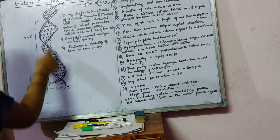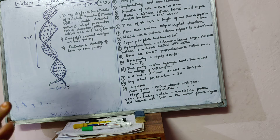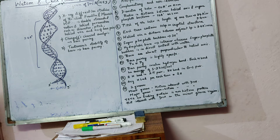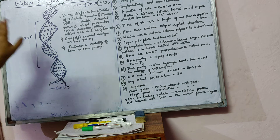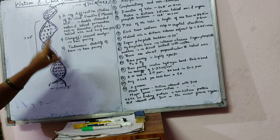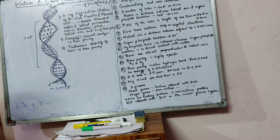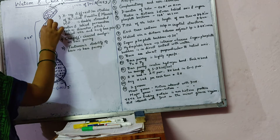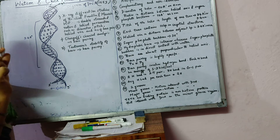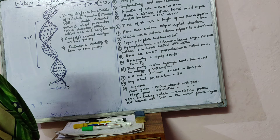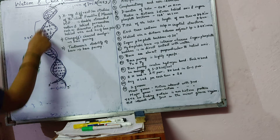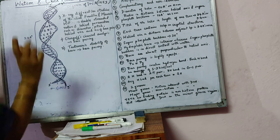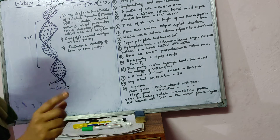Each turn accommodates 10 base pairs in crystal structure and 10.5 base pairs in solution. The helical rise, meaning the distance between two consecutive base pairs, is 3.4 angstroms or 0.34 nanometers. Since the length of one turn is 34 angstroms and each base pair is 3.4 angstroms, exactly 10 base pairs fit in one turn.